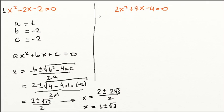So, what we have to do here is, again, use our quadratic formula. So, a is 2, b is positive 3, and c is negative 4.